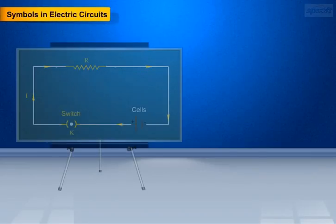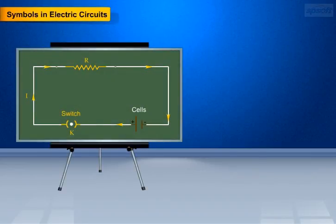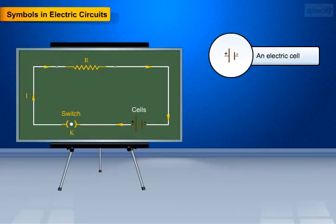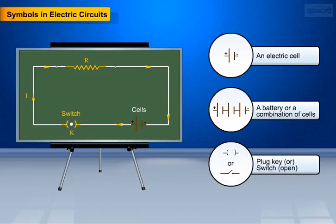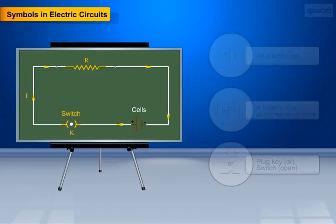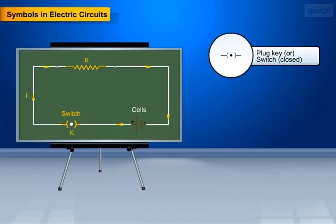The components used in electric circuits are an electric cell, a battery or combination of cells, plug key or switch — open switch, closed switch.